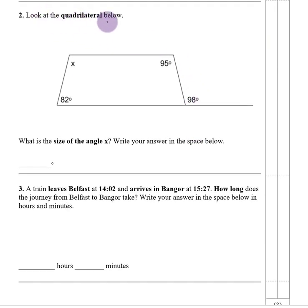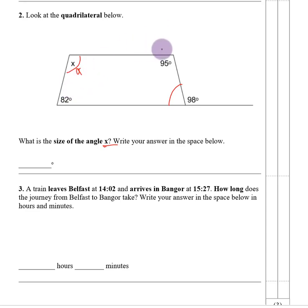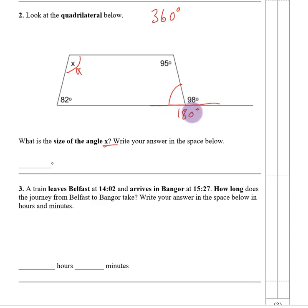Number two. Look at the quadrilateral below. What is the size of angle x? We need to figure out what this angle is. A quadrilateral is just a fancy word for a four-sided shape, and the four angles inside always add up to 360 degrees. But we first need to figure out a missing angle. We notice this is actually a straight line, so this angle plus this angle add up to 180 degrees. So if we do 180 take away 98, it will leave us with this angle, because these two add up to 180.